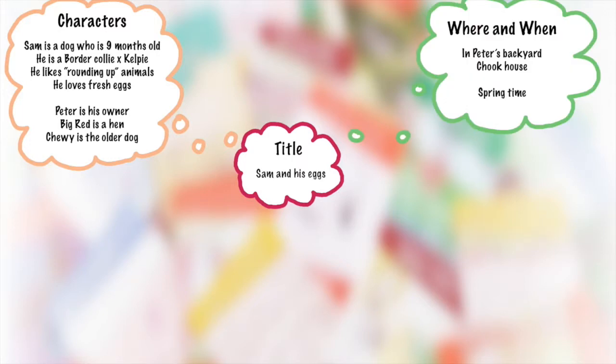Our next mind cloud describes where and when our story is going to take place. In this example, we're in Peter's backyard. He lives on a small farm, and his backyard is where his chooks are and where his dogs hang out. His chooks are free range, so they fossick around the backyard eating all the bugs and turning up the garden. The dogs are there to protect them from foxes and cats. The when of our story is early springtime when the chooks are all starting to lay their eggs.